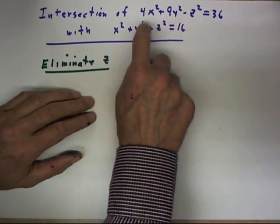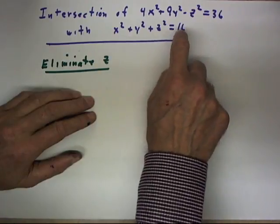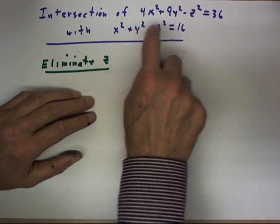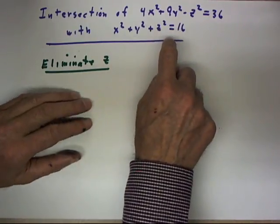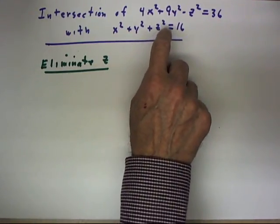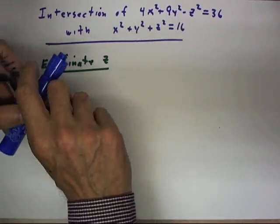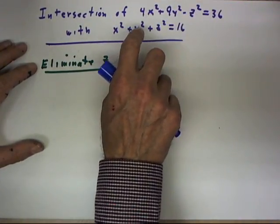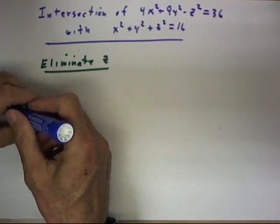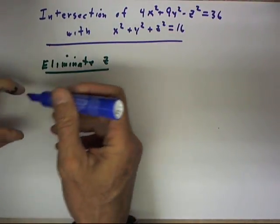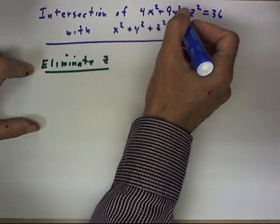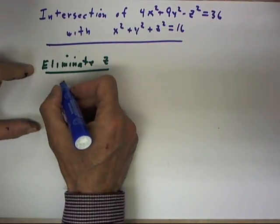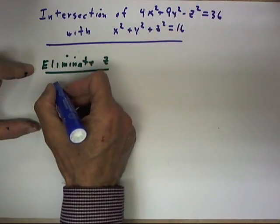The two surfaces here, the elliptical hyperboloid and the sphere, will intersect when the x, y, and z coordinates of each are equal. To determine where that intersection occurs, we can simply eliminate z between these equations. We can begin by eliminating z and we add the two equations.